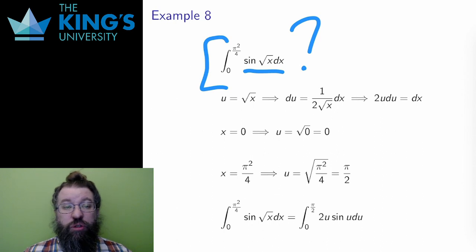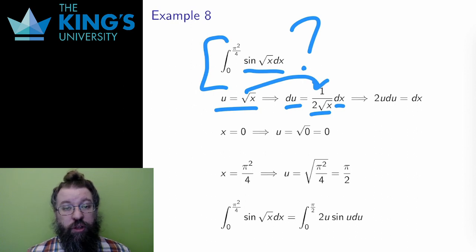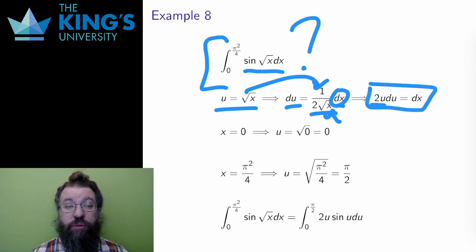However, I'm going to do substitution for root x and see what happens. If u equals root x, then du is one over two root x, that's the derivative of root x, times dx. To make this more reasonable, I can replace root x with u, that is a substitution after all, and then isolate dx by multiplying both sides by two u. And the result is that two u du equals dx.